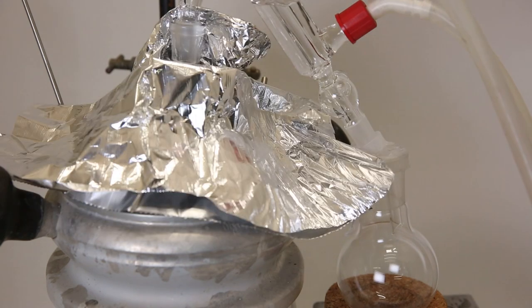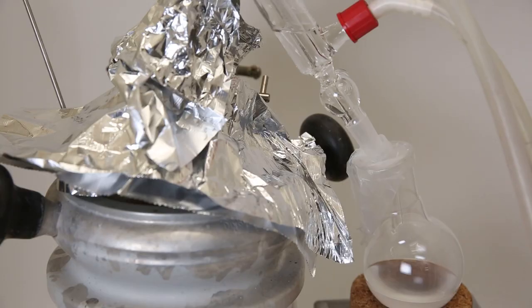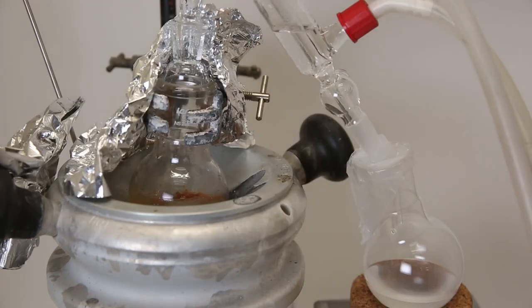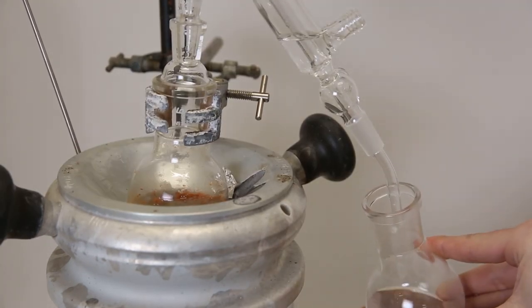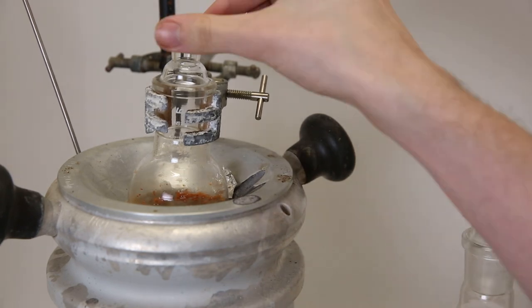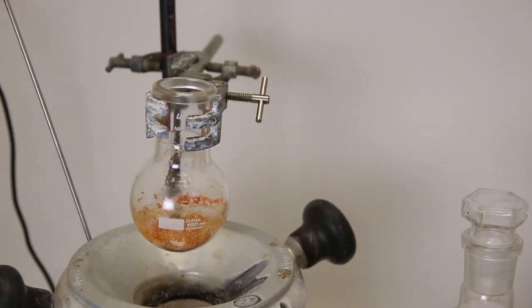So I bring the liquid to a boil and insulate it with some aluminum foil. After a while, nothing came over anymore. So I remove the aluminum foil and see that all the liquid is gone. I remove and stopper the flask with the benzene and take apart the setup. We can see that all that is left in the flask is some orange stuff mixed with the calcium chloride.